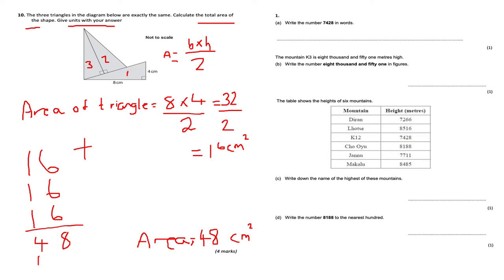This is the next section — question 1 again. Write the number 7,428 in words: seven thousand, four hundred and twenty-eight.